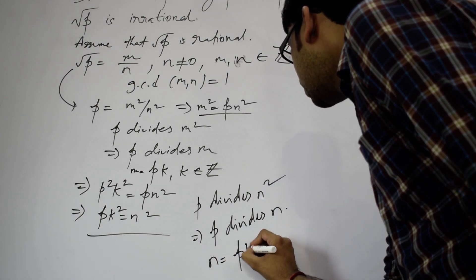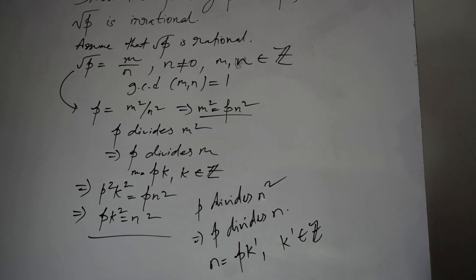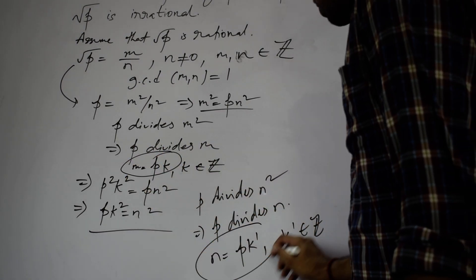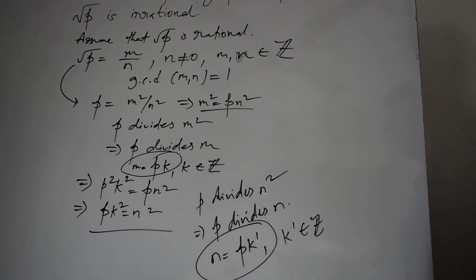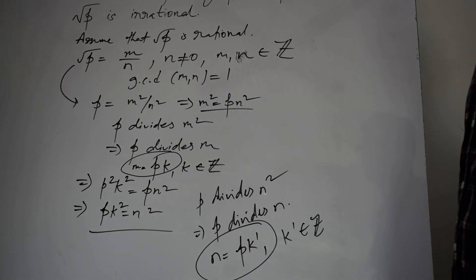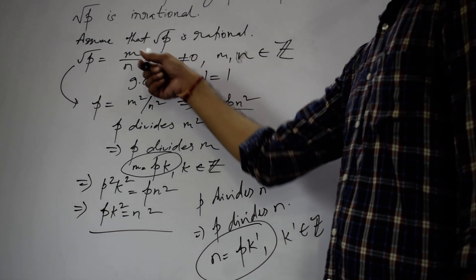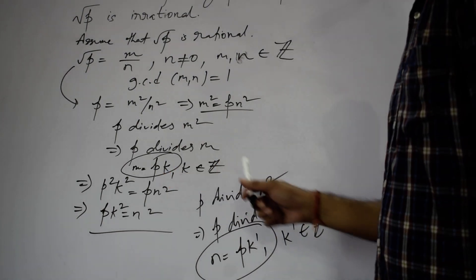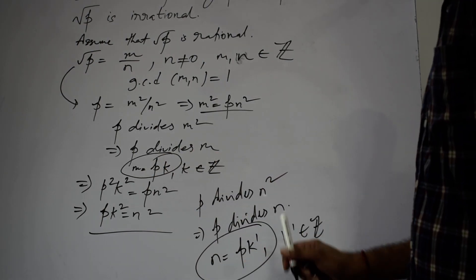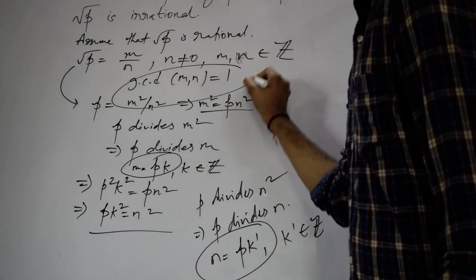So n can be written as p times k dash, where k dash is any integer different from 0. Therefore, we have shown that m equals p times k and n equals p times k dash, where both k and k dash are integers. This means p is a factor of both m and n. But we assumed that GCD of m and n is 1, which follows from the definition of a rational number. Therefore, a contradiction has been arrived at, since p being a factor of both m and n contradicts that GCD of m and n is 1.